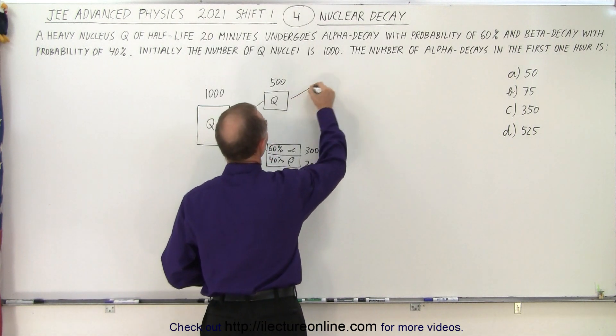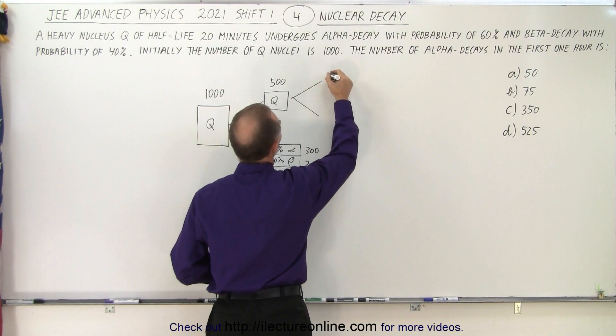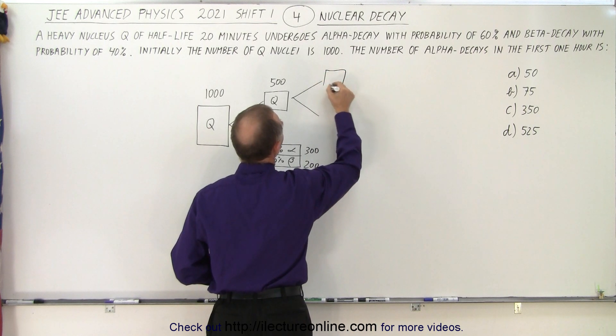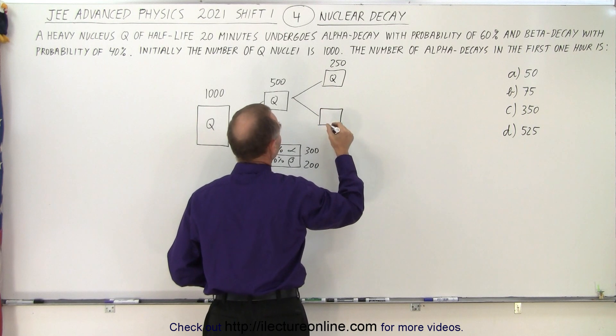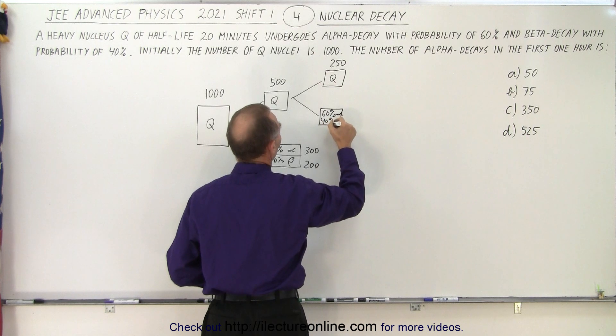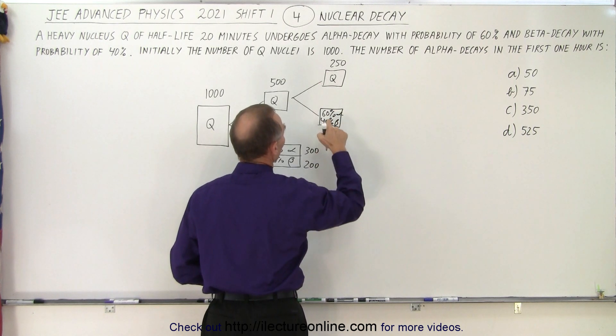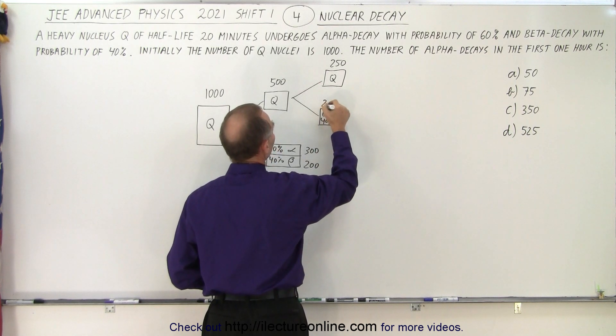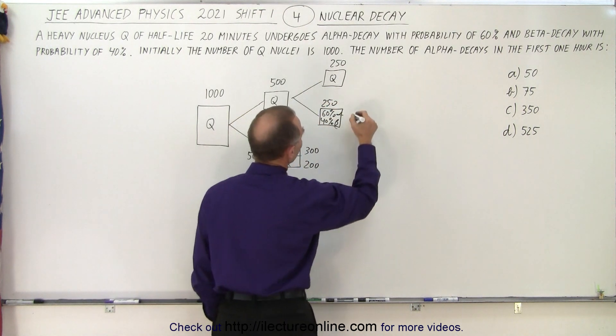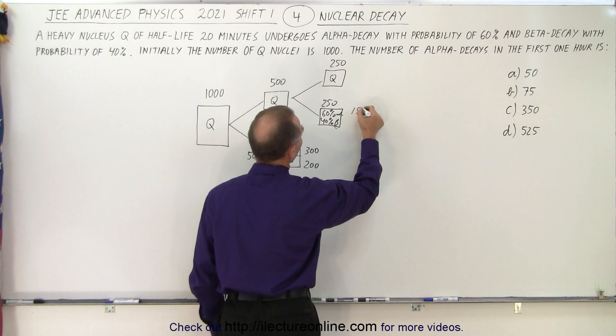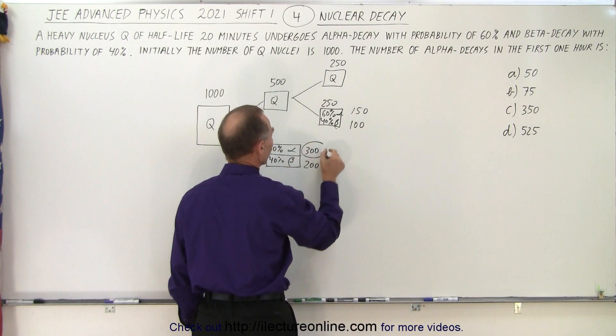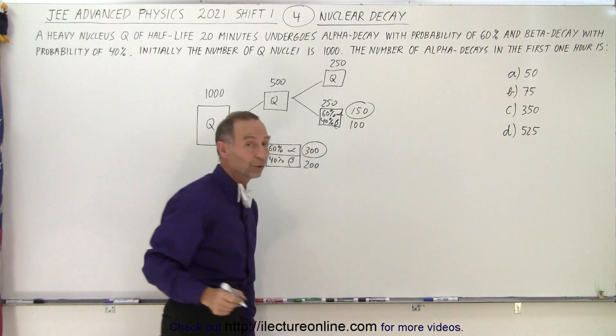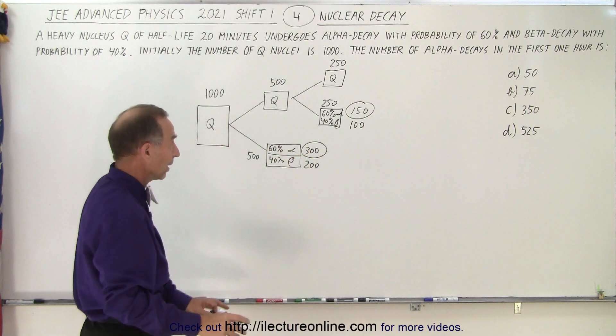Again, we're going to have half of these decaying, so that would be 250 still as Q nuclei and the other 250 will have decayed. We have 60% alpha and 40% beta. So 60% of 250, that would be 150 alpha decays and 100 beta decays. So we have 300 plus 150, that already adds up to 450. But we're not done yet.